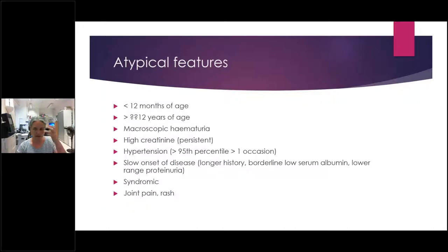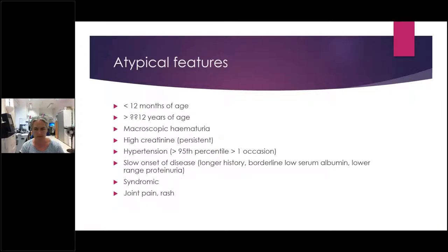If there's a slow onset disease — a long history, perhaps picked up not because they presented as oedematous but because a borderline low serum albumin was found on a blood test for another reason, or lower ranges of proteinuria, or parents say they've had puffy eyes for months — those are atypical features. Also consider dysmorphic features or syndromic appearance, and in older children any systemic features like joint pain or rash.